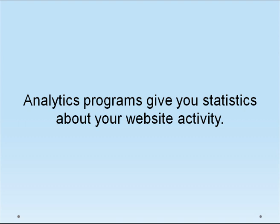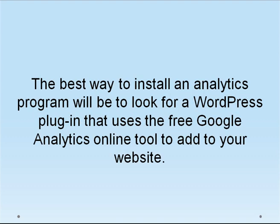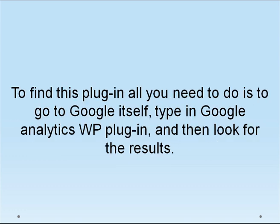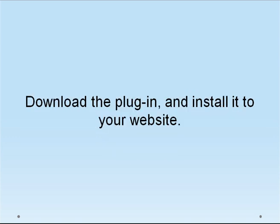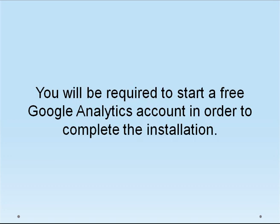Analytics programs give you statistics about your website activity. The best way to install an analytics program will be to look for a WordPress plugin that uses the free Google Analytics online tool to add to your website. To find this plugin, all you need to do is go to Google itself, type in Google Analytics WP plugin, and then look for the results. Download the plugin and install it to your website.